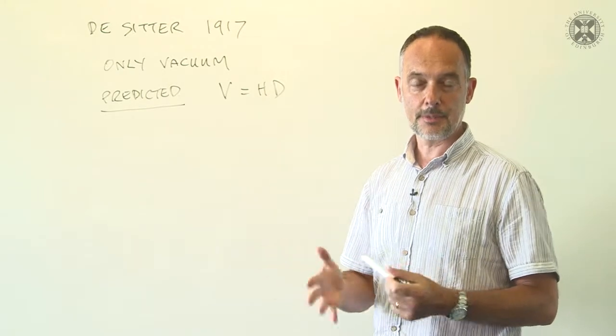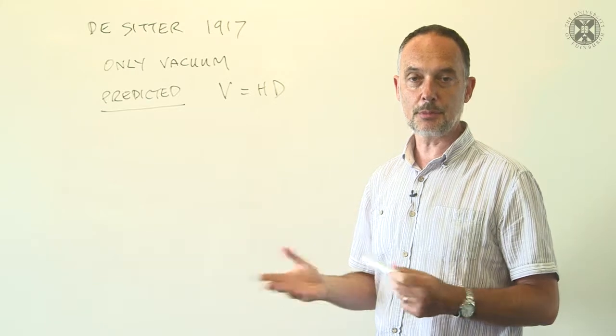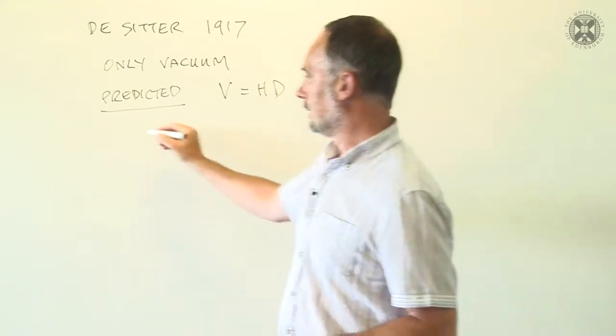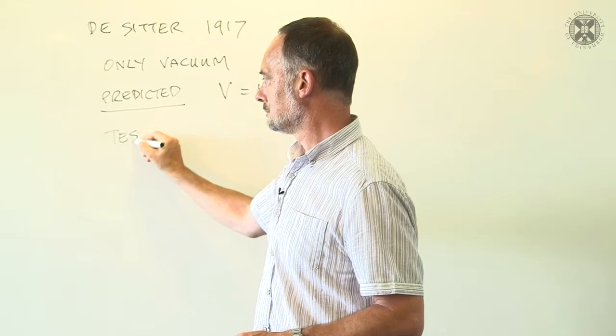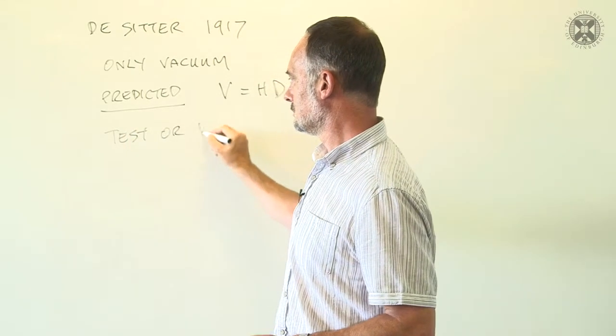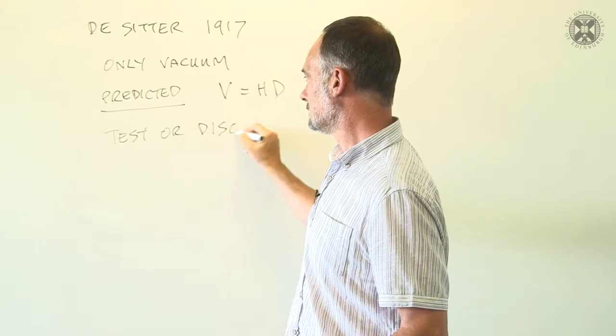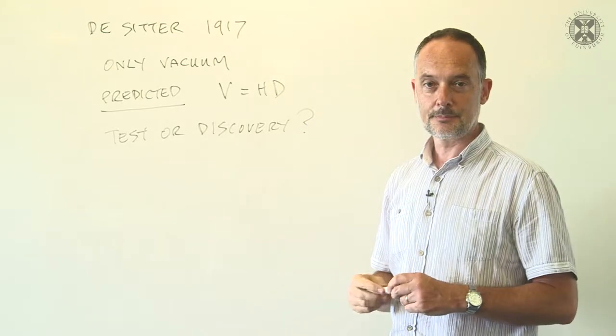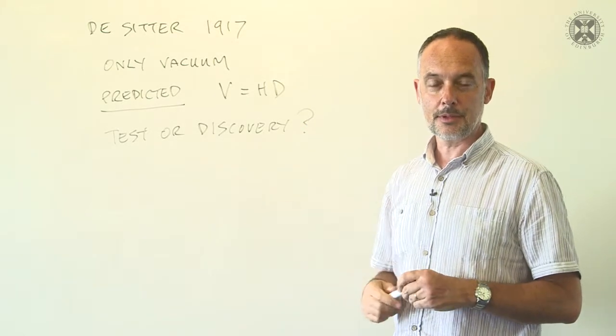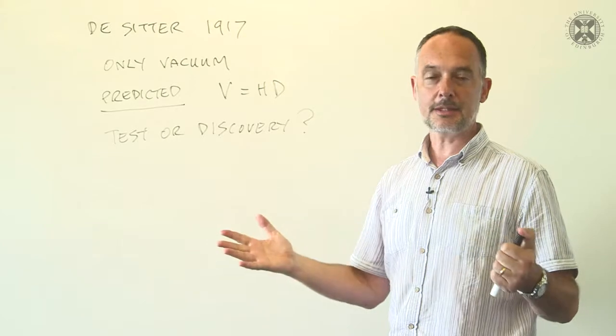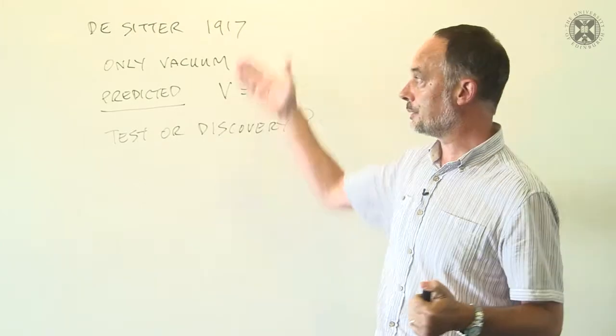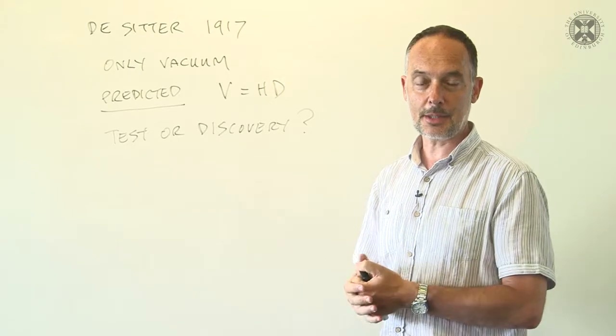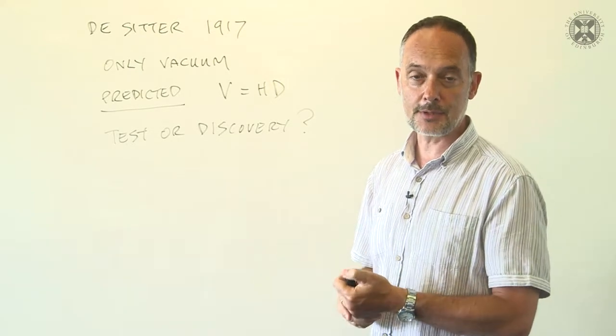A number of astronomers before Hubble, leading up to Hubble's paper, which was the most comprehensive of these analyses in 1929, discovered or tested this prediction. So although Hubble's law is often presented as an unexpected surprise, in fact, the theoretical context led people to look for results of this form. It's interesting to speculate how long its discovery might have taken otherwise.